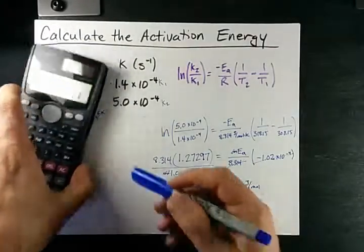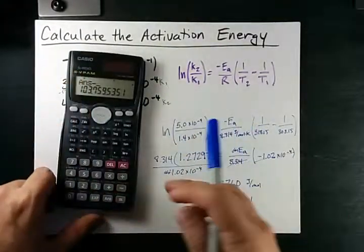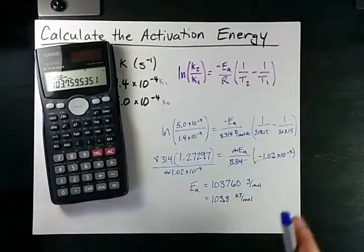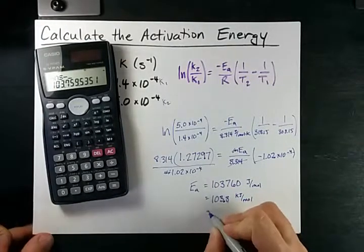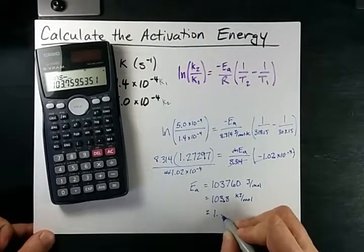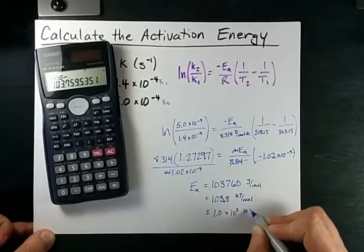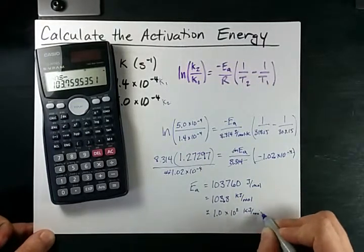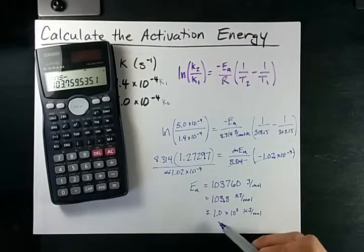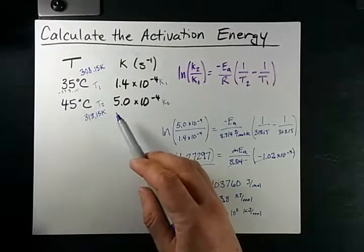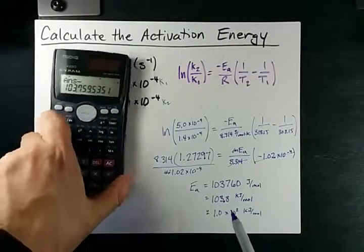Now that doesn't include significant figures, but you can do significant figures yourself without me. So you know what, I'll do it for you anyways. That's 1.0 times 10 to the 2 kilojoules per mole. I had to round this to two significant figures and put in scientific notation because these have two significant figures.